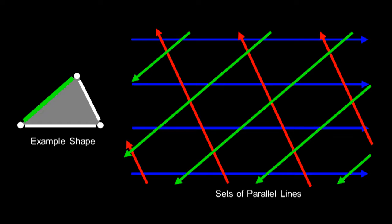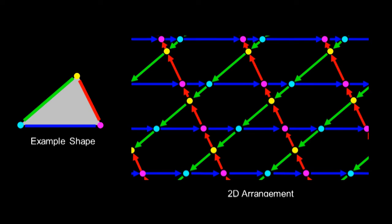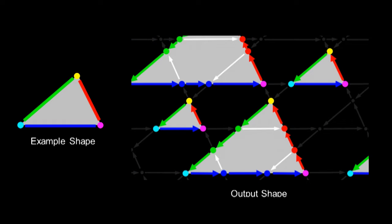And now we create a vertex wherever any of these lines intersect. Then we're going to generate new shapes within these parallel lines. Now let's go back to our input shape and divide it up using these parallel lines.